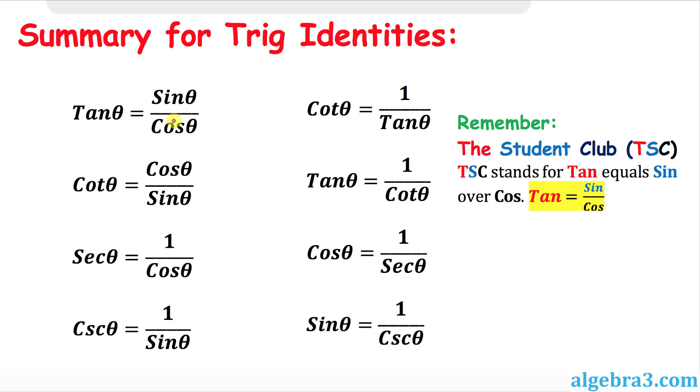Finally, let's look at these trig identities. The very first one is tangent equals sine over cosine. You must always remember that. Some of my students have issues remembering these trig identities. Usually I tell them this: the Student Club, TSC. T stands for tangent equals sine over cosine. As you can see, this helps them a lot.